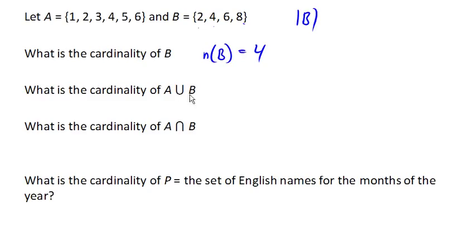Okay, what is the cardinality of A union B? Well, in order to answer that, let's go ahead and find the union. So we need to union these two sets. We've got everything from A. And now we're going to combine that with everything from B. We already have 2, we already have 4, we already have 6. We just need 8.